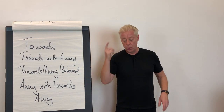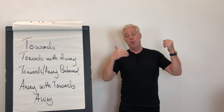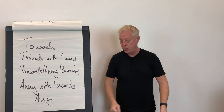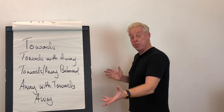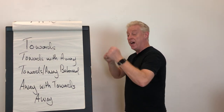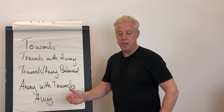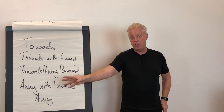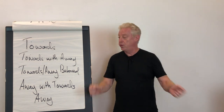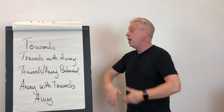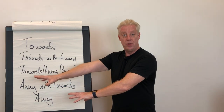I'm also listening for modal operators of necessity. So if I ask, why is recognition important to you, and they say 'because I have to be recognized,' the metamodel question would be: what would happen if you weren't recognized? And that's going to give me the away from that they've got. For example, they might say, 'I would be dissatisfied and I would leave.' So that's your away from.